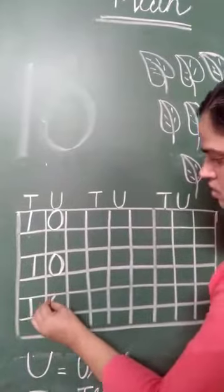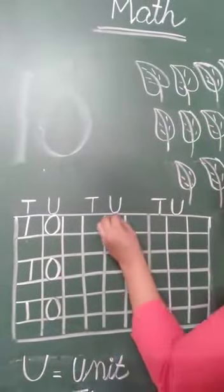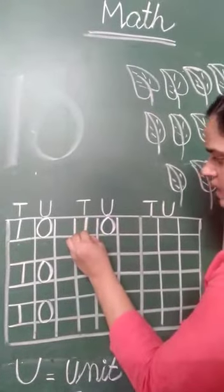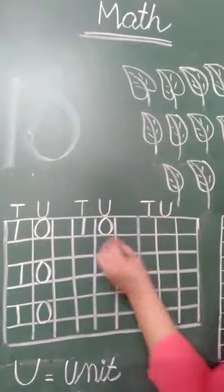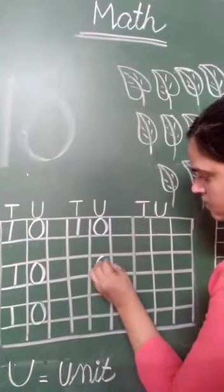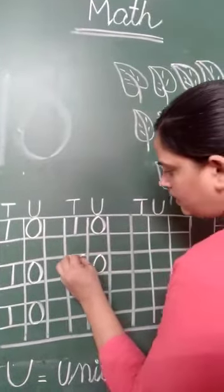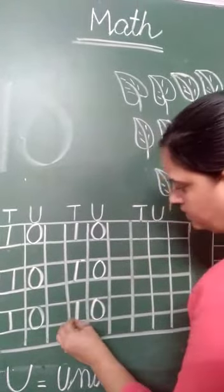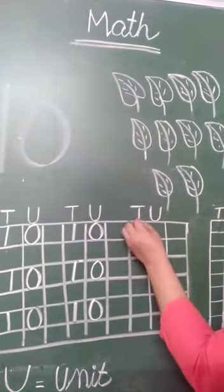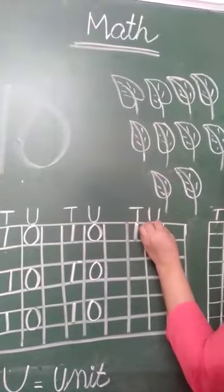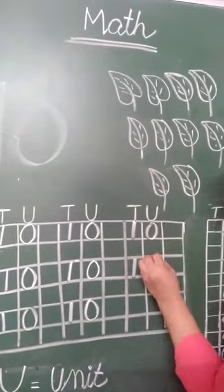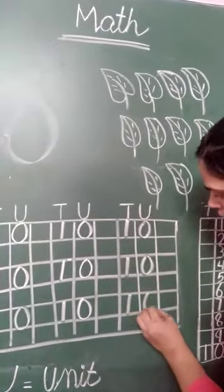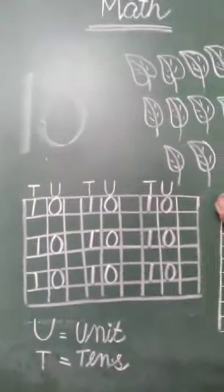1, 0 — 10. 0 क्या बन गया हमारा? Unit. और 1 बन गया? 10s. See again: unit, 10s. 0, 1 — 10. जैसे यहाँ पर 2 अंक ऊपर आता है, दूसरी digit आती है, तो यह क्या बन जाता है? 10s.